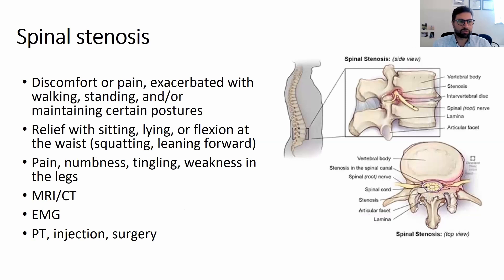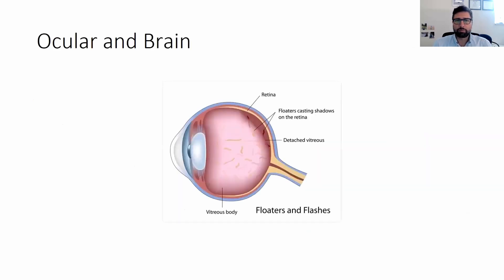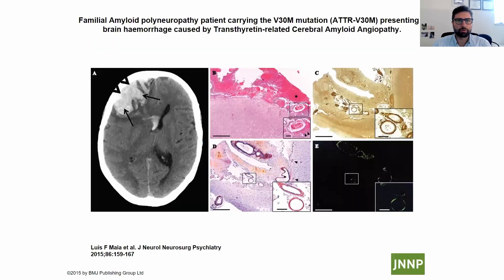Spinal stenosis is another common issue in ATTR amyloidosis. Amyloid deposits in the connective tissue and ligamentum flavum, compressing the nerve at the spinal cord level. Amyloid can also be deposited in the eye, and patients may present with floaters affecting vision. If those are removed and stained for Congo Red, they will stain positive. Patients can also have glaucoma, cataracts, dry eyes, and other ocular problems.